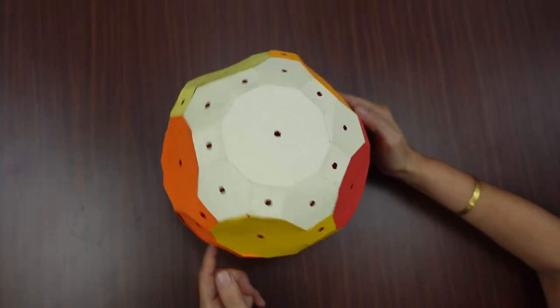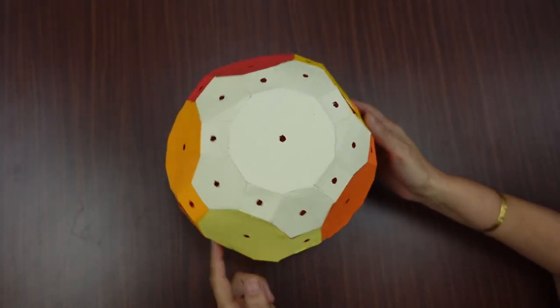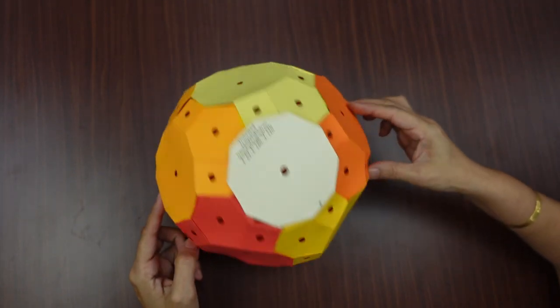Thus, when all the flaps are joined to the side flaps, we see a truncated icosidodecahedron formed.